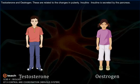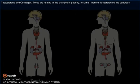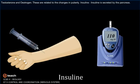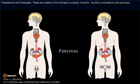Testosterone and estrogen are related to changes in puberty. Insulin is secreted by the pancreas.